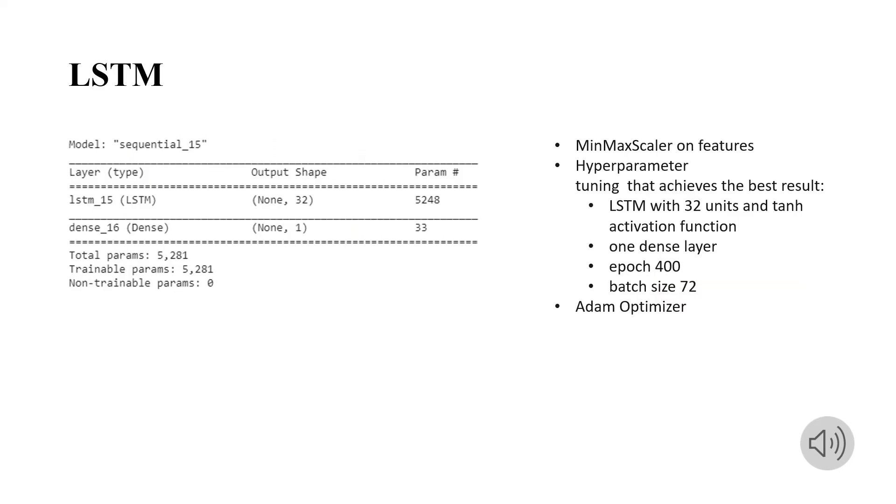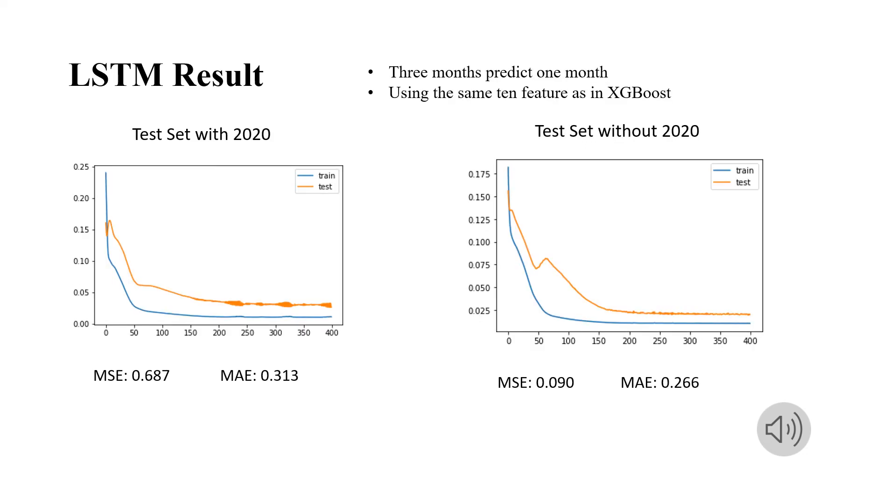Since our data is small, after some hyperparameter tuning, I found I built a relatively simple LSTM. Just one layer of LSTM with 32 units and one dense layer. The optimizer that I use is Adam. On the left shows the result that has test set with 2020 included. We achieved MSE of 0.687, which is better than both random forest and XGBoost. We also tested without 2020, since this is such a special year. And we achieved much lower MSE, lower than 0.1.